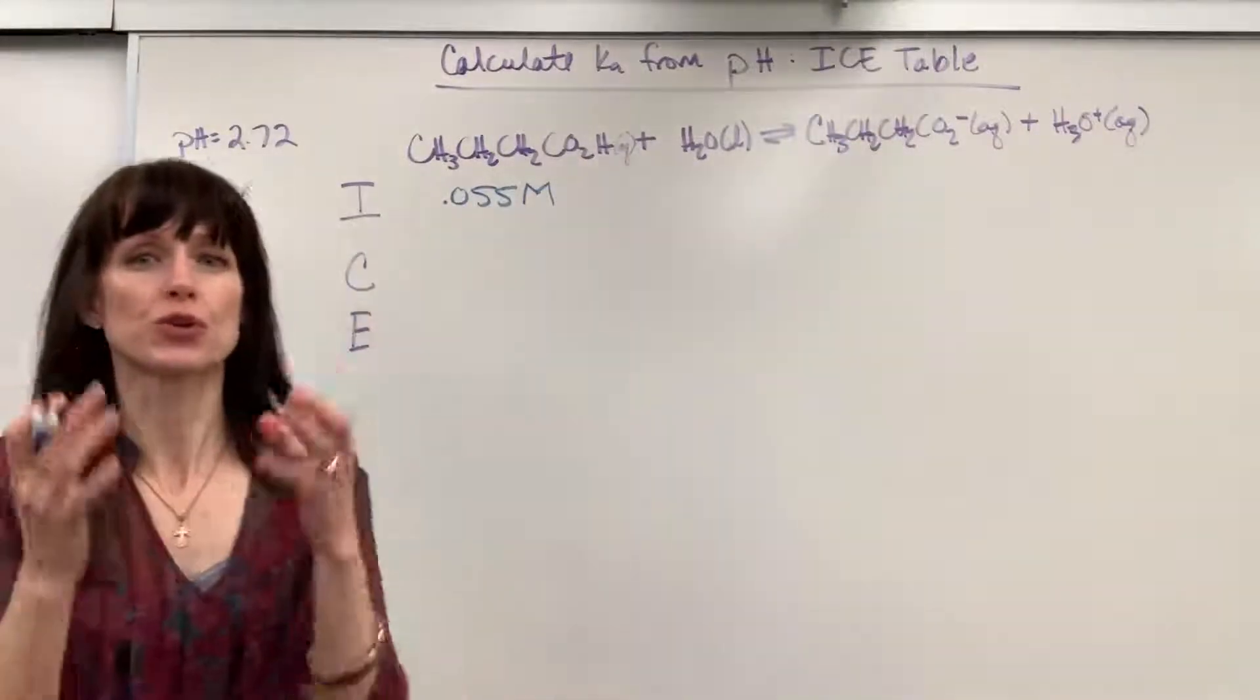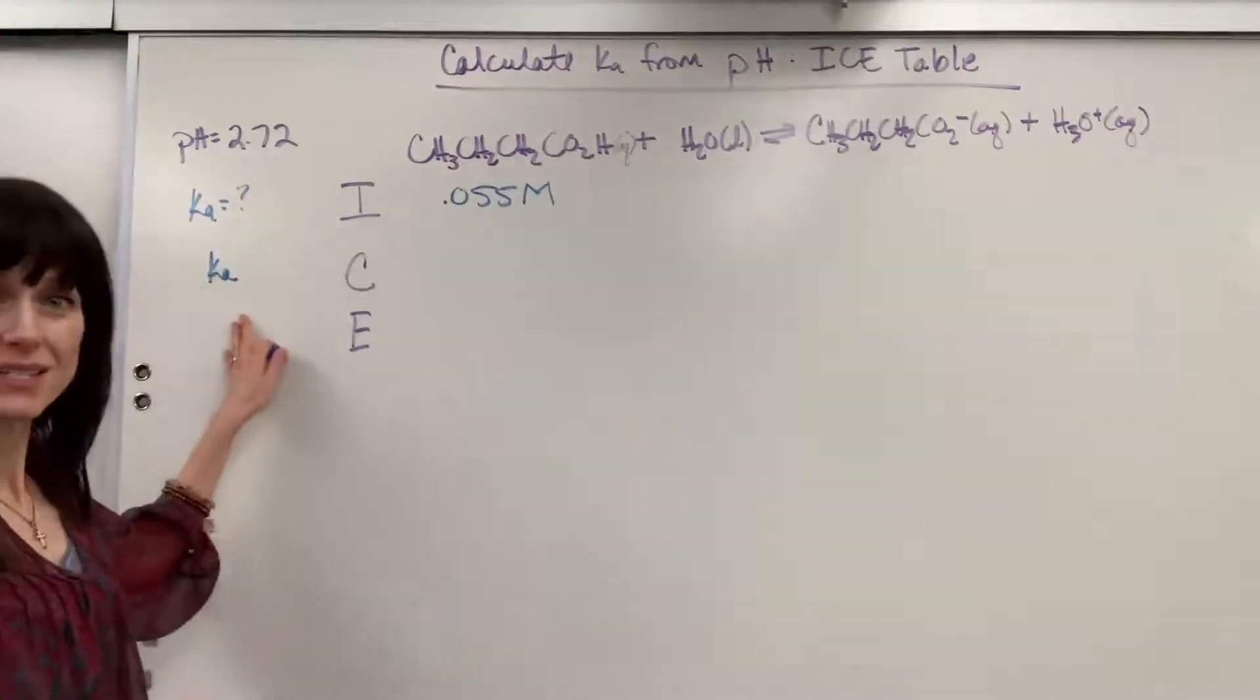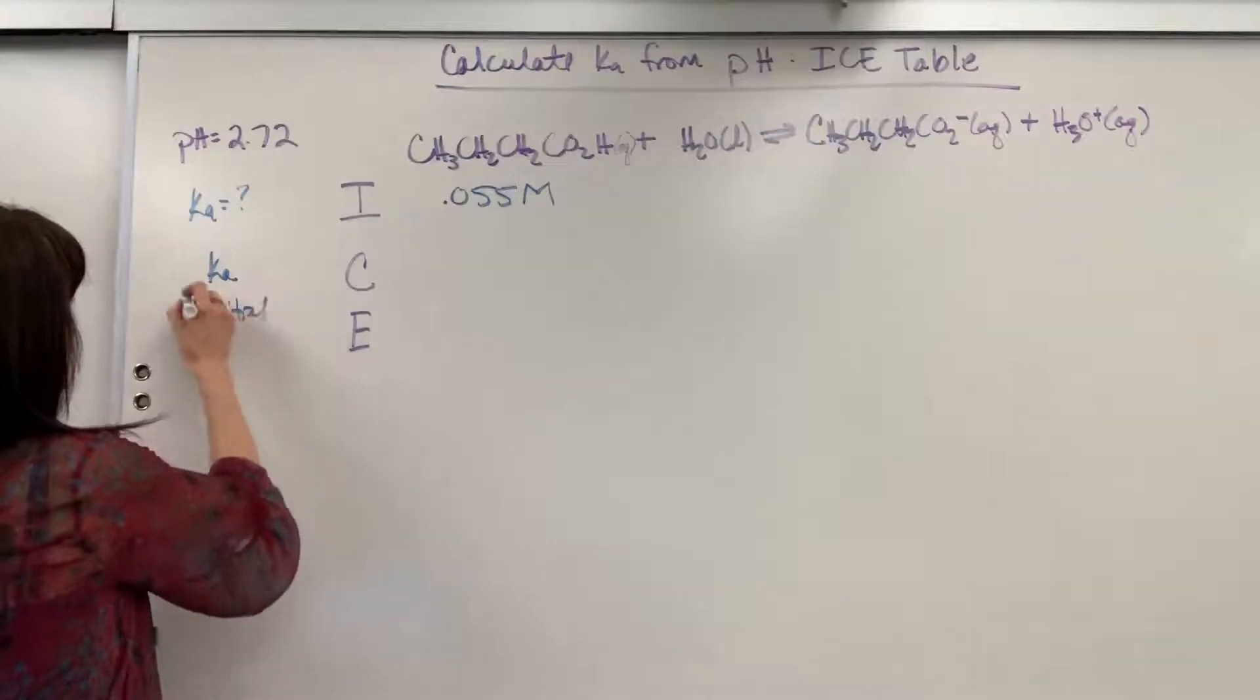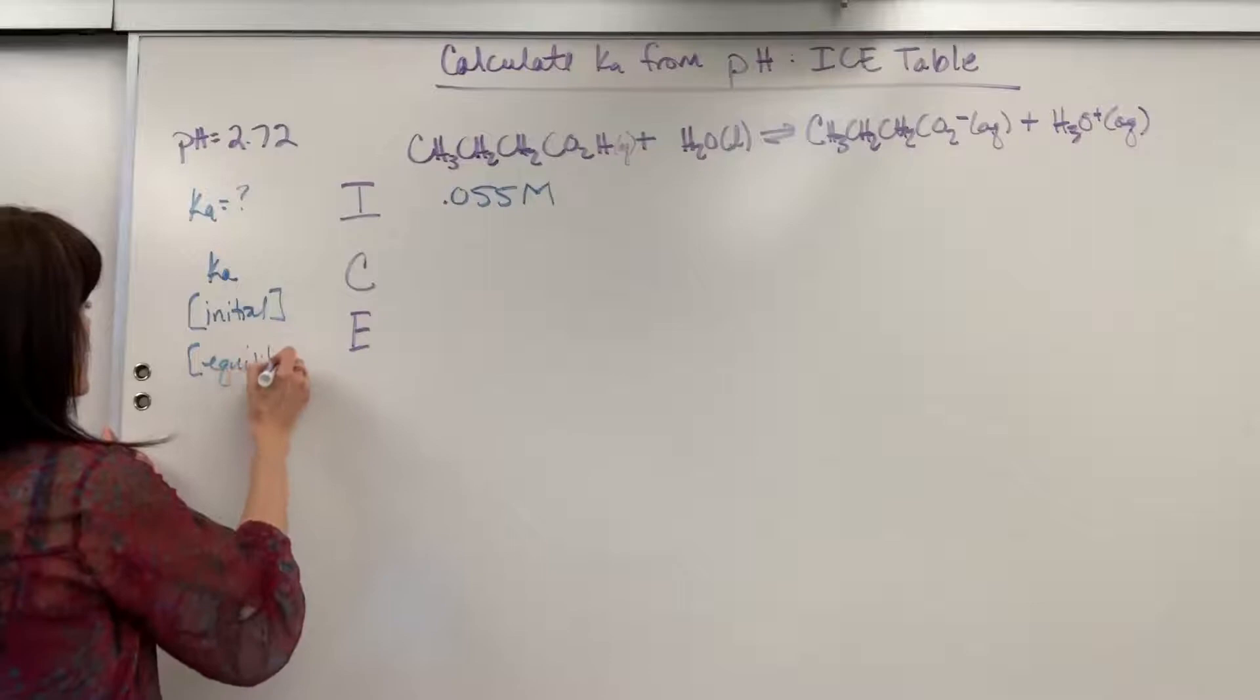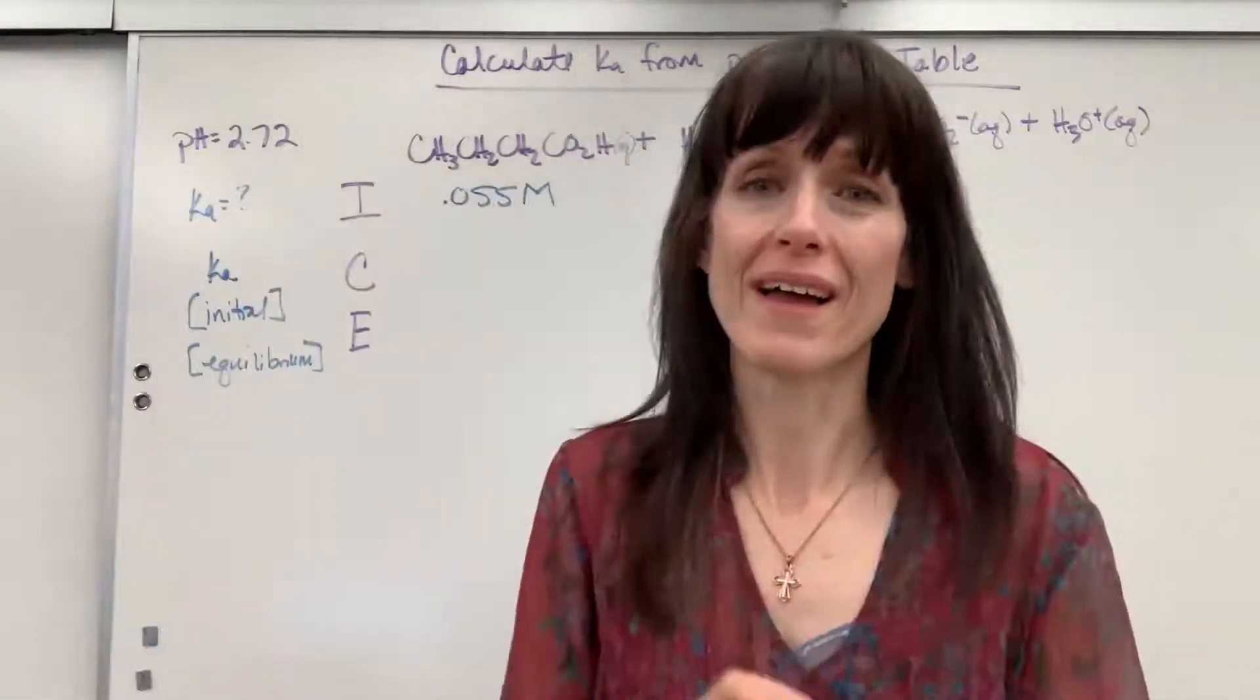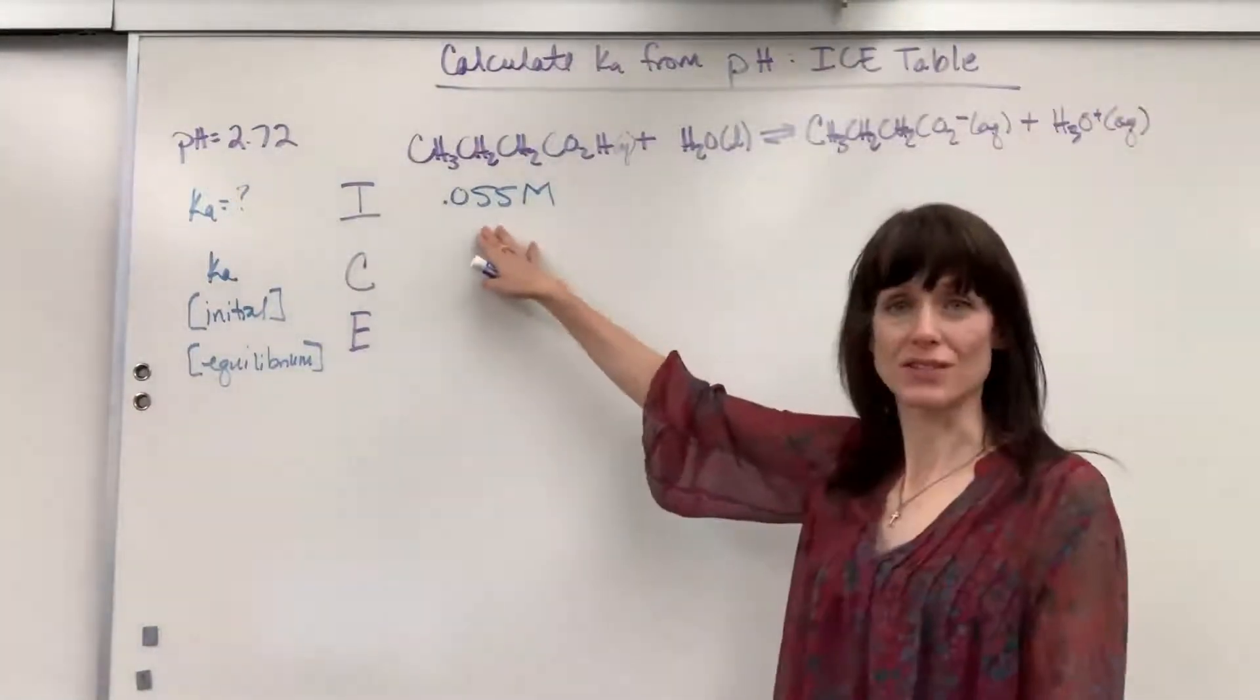There are always three crucial pieces of information. There's going to be the equilibrium constant, in this case it's Ka. There's going to be the initial concentration. And then you have the concentrations that are final that are at equilibrium. So in order to solve for one, you have to have the other two. Well, they gave us the initial concentration. Great.